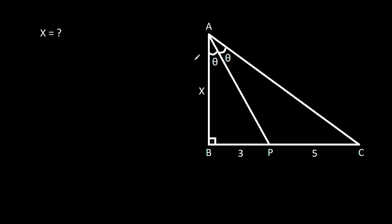In this video, we have been given that angle ABC is 90 degrees, angle BAP is theta, angle CAP is theta, BP is 3, CP is 5, and AB is X. Then we have to find X.